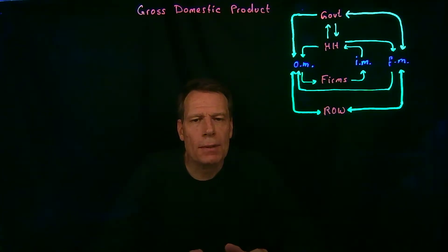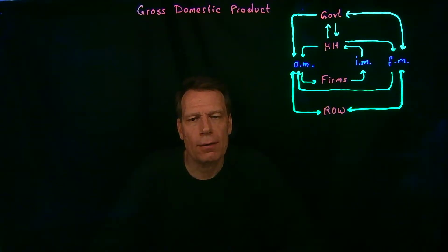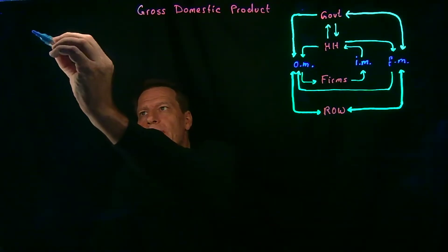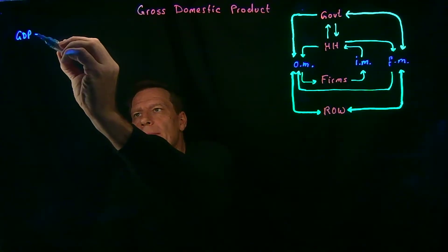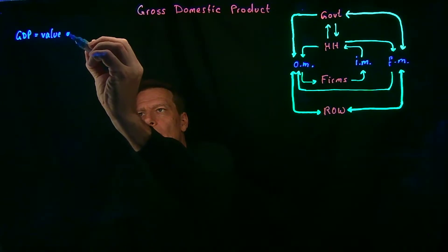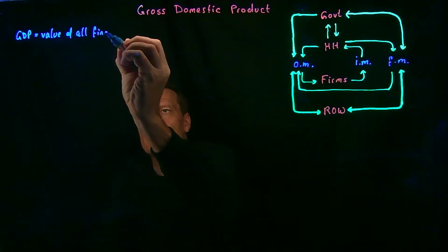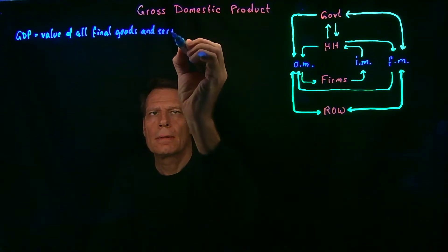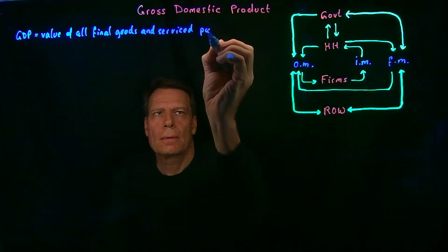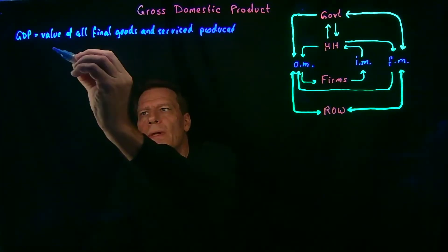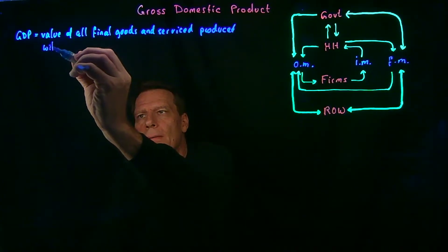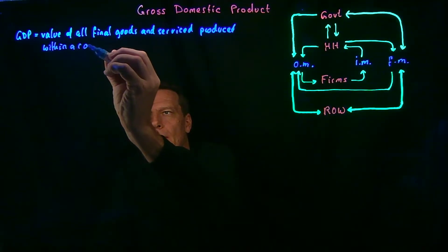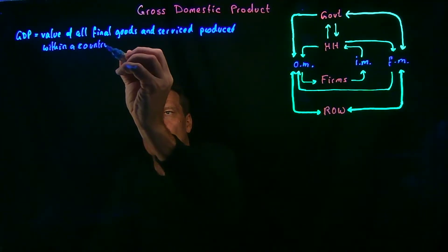But before we can get there, we have to be really clear about what it is that we're measuring in this diagram and how things flow in the diagram. And the most important thing that we measure is what we call Gross Domestic Product, or GDP. GDP is just the value of all final goods and services that are produced within a given country over some time interval.